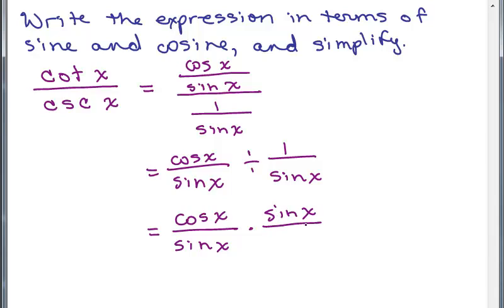So that would be sine x over 1. Now we can cancel here. These divide out. And we have in the numerator cosine x over 1, but anything over 1 is just the numerator. So cotangent x over cosecant of x is a complicated way of just simply writing the cosine of x.